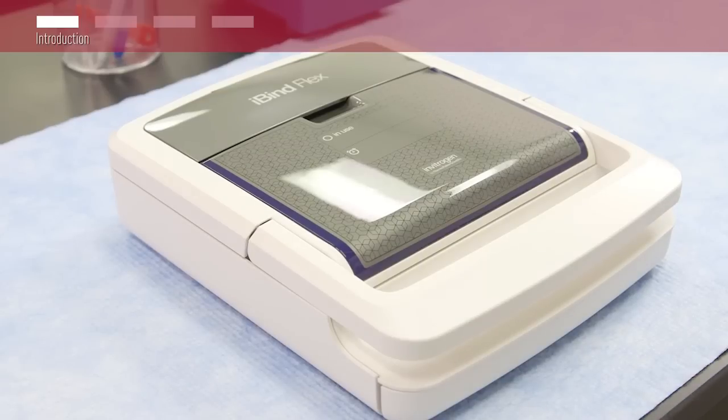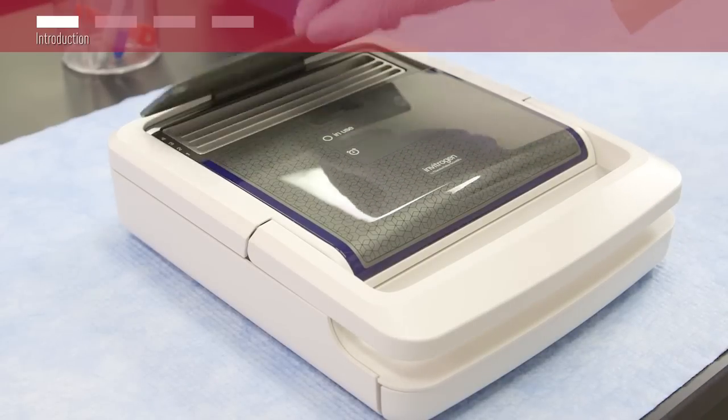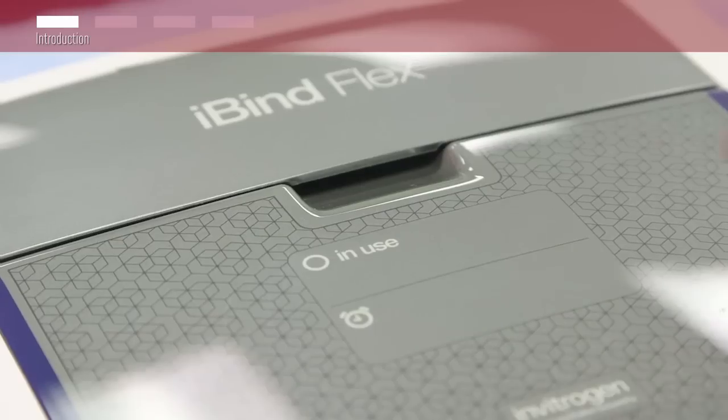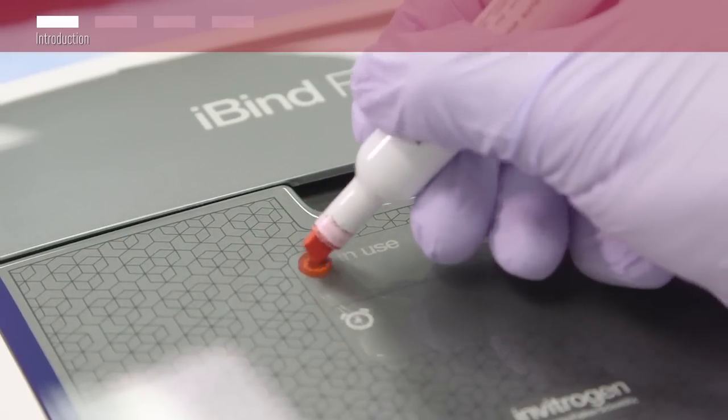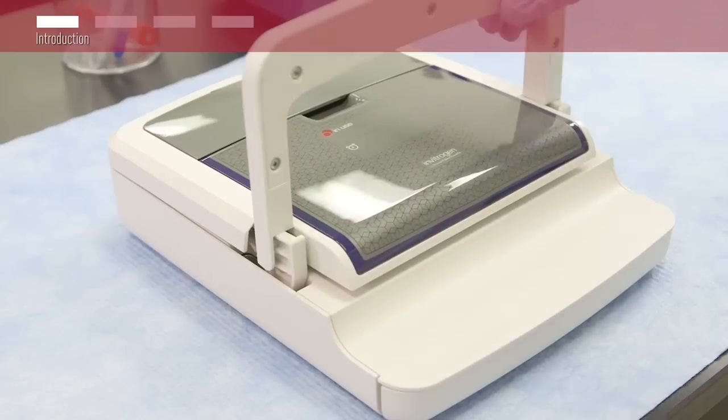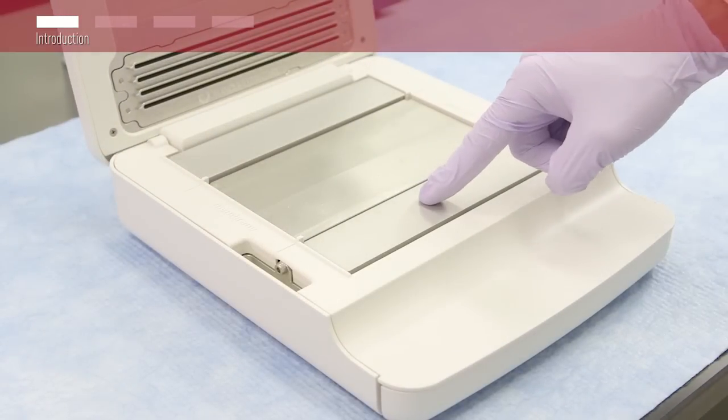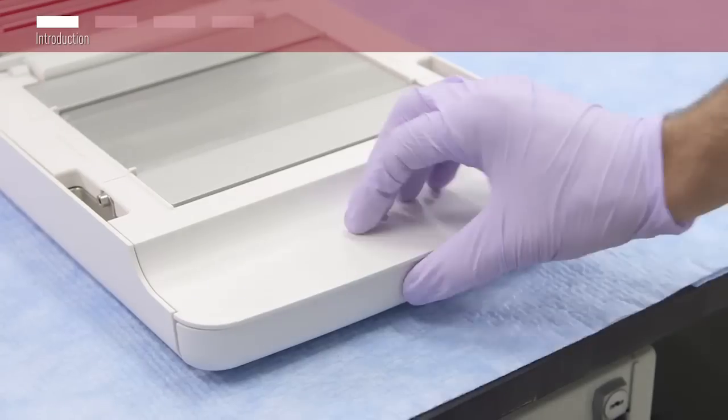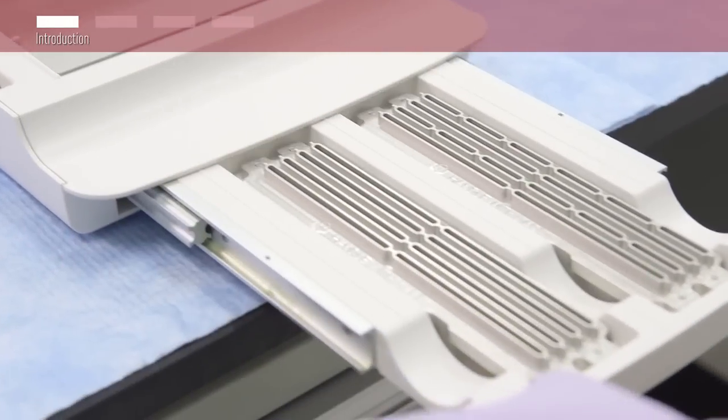The iBind Flex device consists of a liquid door where reagents are loaded, a dry erase area to notate in use and start time, a main latch handle and lid, two spring-loaded plates to hold the card, and a drawer to store the unused well inserts.